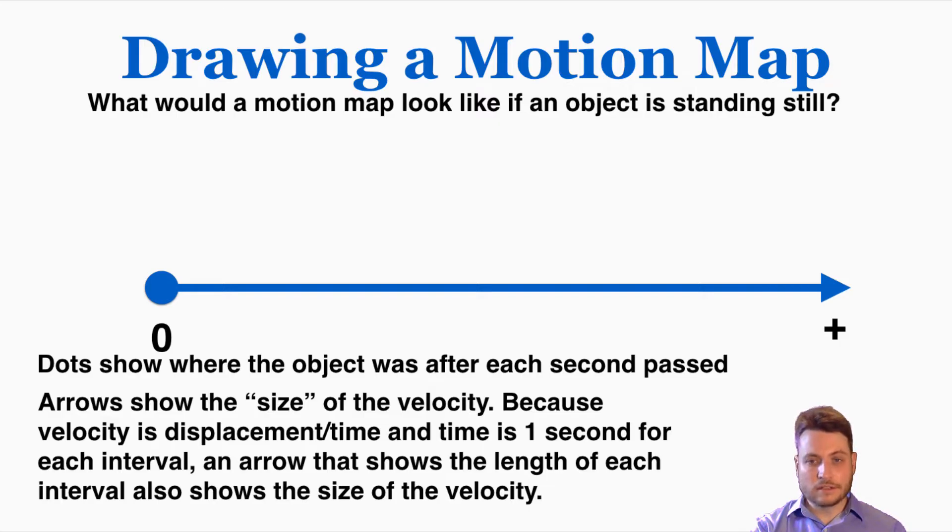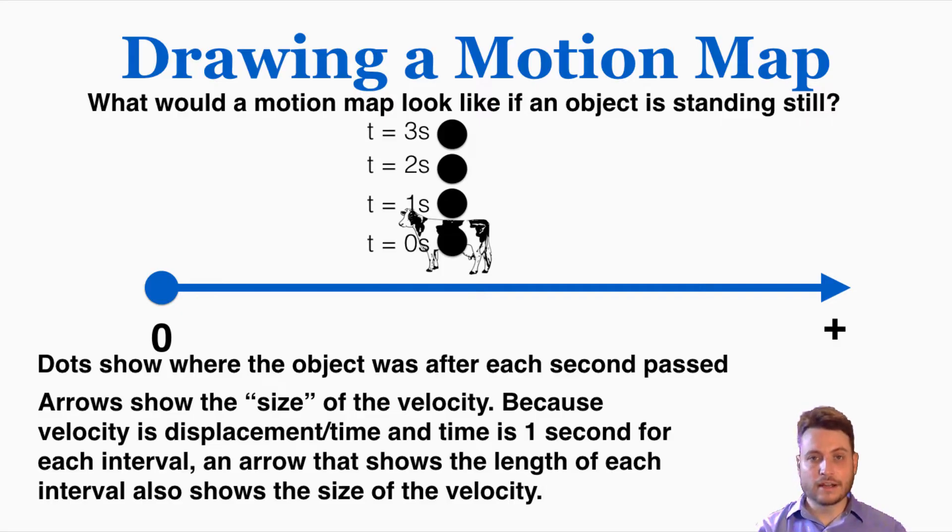If an object is standing still, like if we have a cow sitting here and it's just standing still, we just draw the same dot every second. And we're just going to put that dot above the previous dot like this, just so we don't keep drawing in the same place over and over again. So if you have dots that are kind of piling on each other like this, what this means is that the object is standing still in one specific spot.